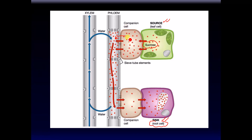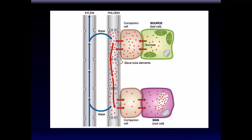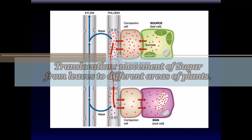This process requires energy. As sugar enters the phloem, osmotic pressure causes water to move from the xylem into the phloem. This increases the water pressure in the phloem and pushes the sugar down to where it's needed. The movement of sugar from one area of the plant to another is called translocation.